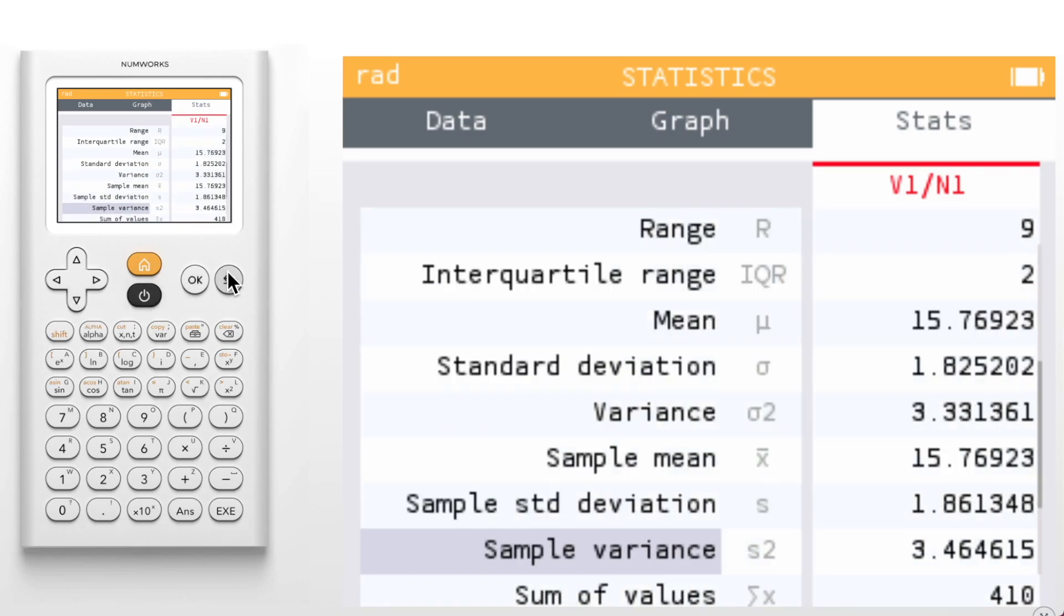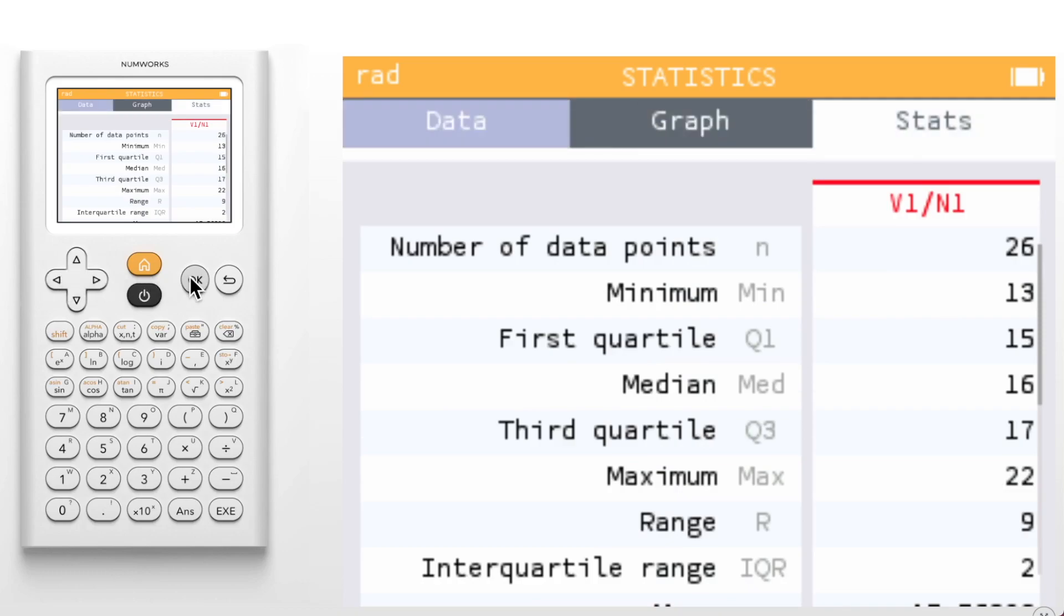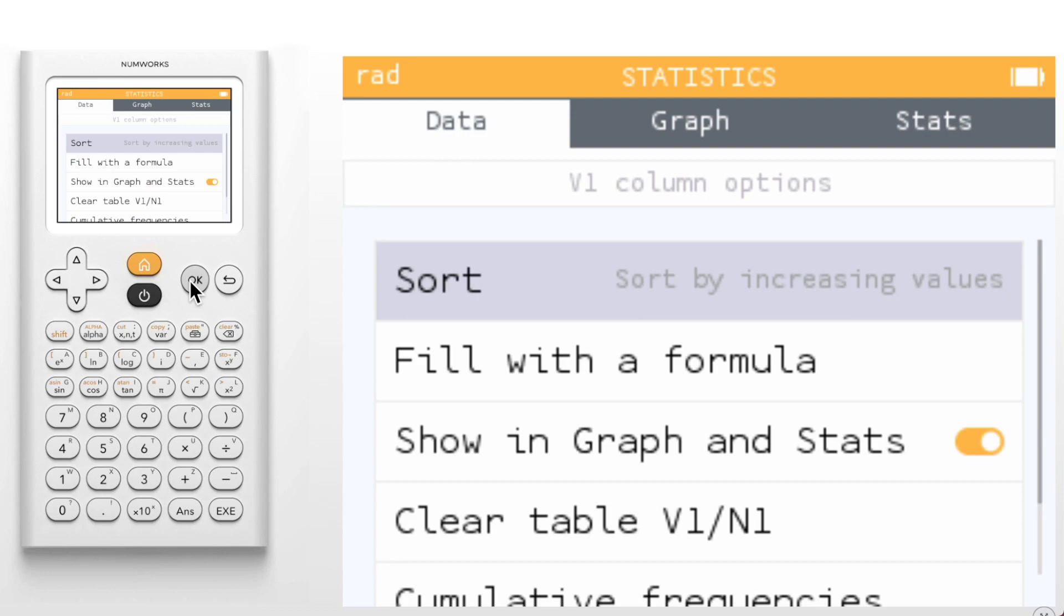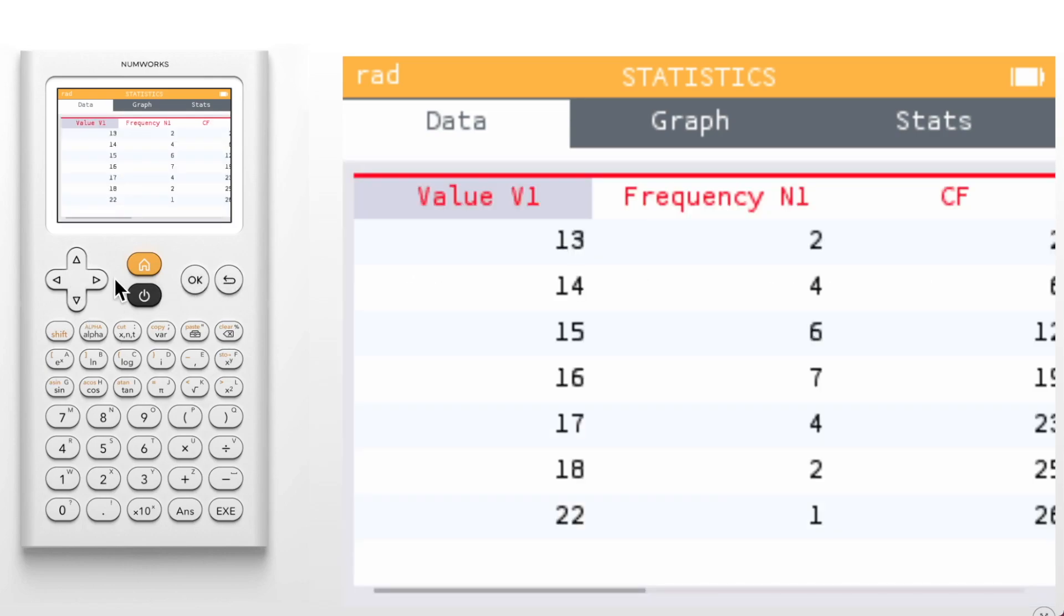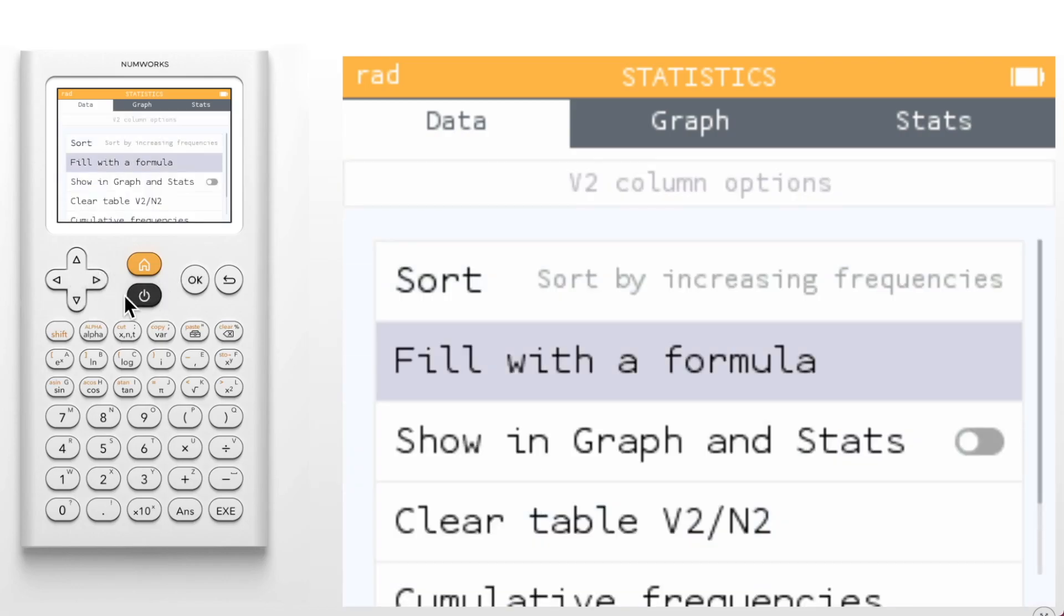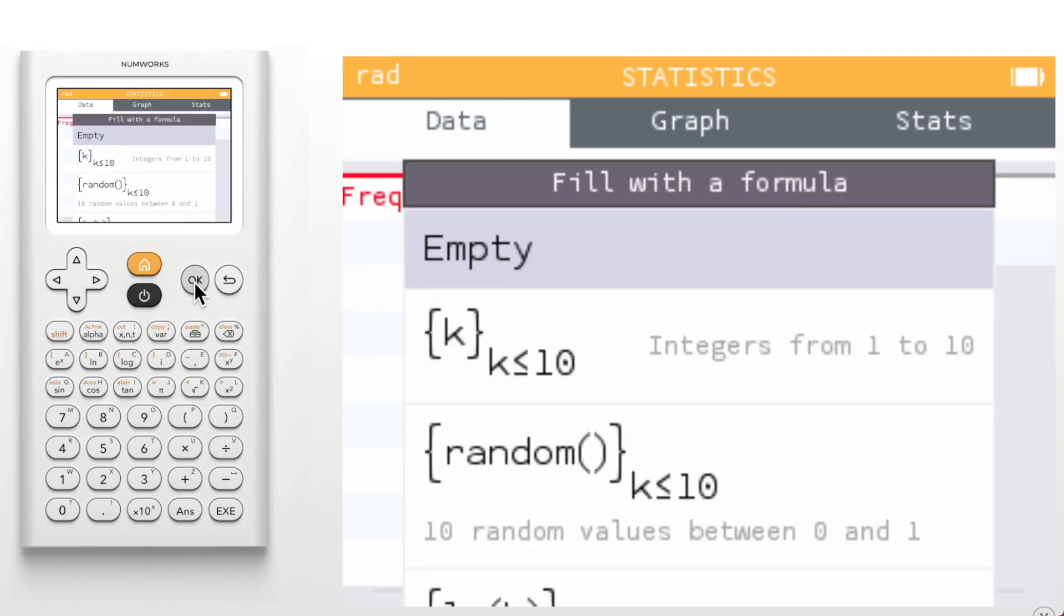Going back to the data tab, I want to mention a few other options within the column options. One of the improved options is the fill with formula tool. Let's add another data list to v2 using a formula. To do this we'll open the column options for v2 and select fill with a formula. Before we were only able to reference other columns within the statistics application. Now it is possible to create a list using a new list features.